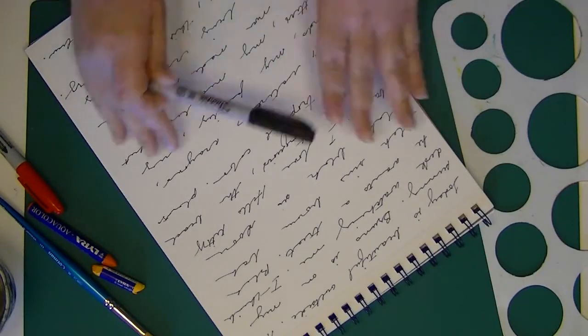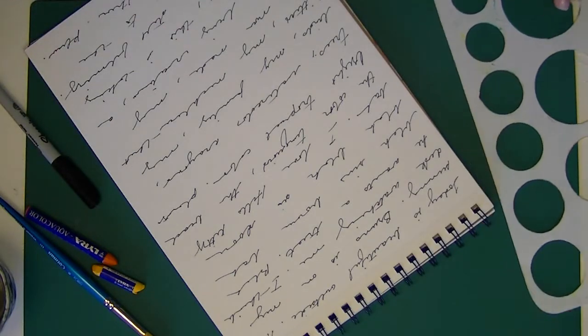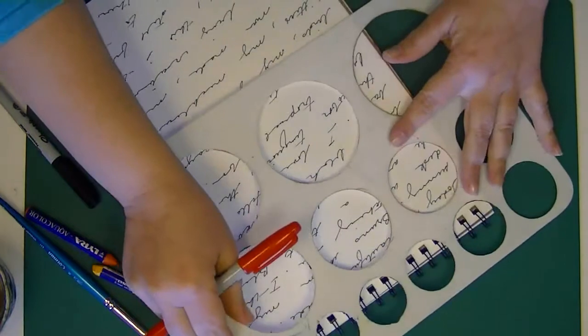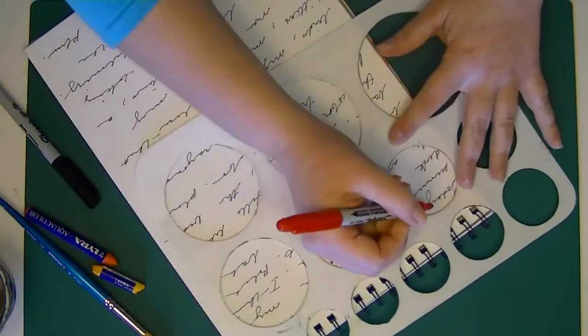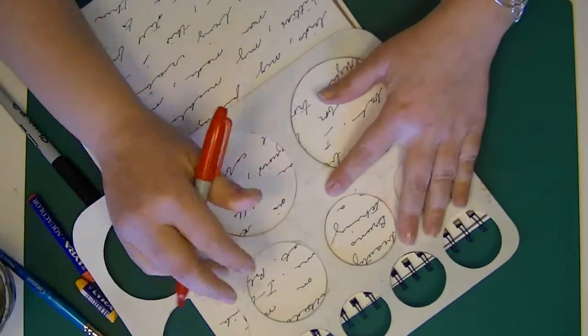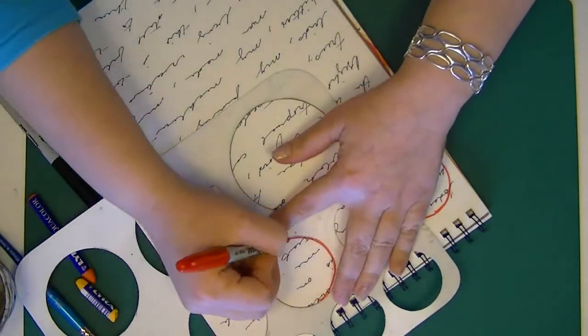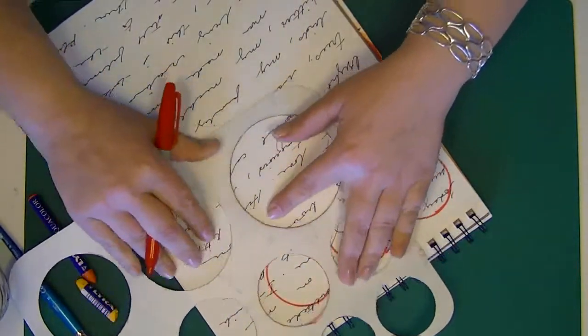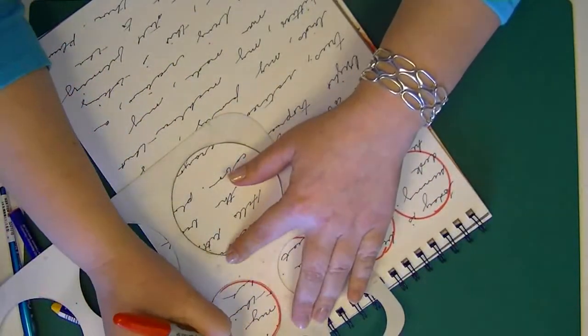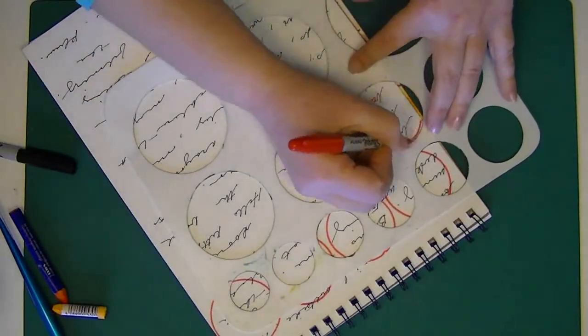So you can see that I just filled the page with random thoughts. Now I'm going to take my Sharpie marker—it's a little bit thicker—and I've got my circle template, and I'm just going to draw circles. I'm trying to keep them kind of next to each other, but it doesn't have to be perfect.